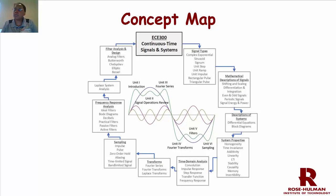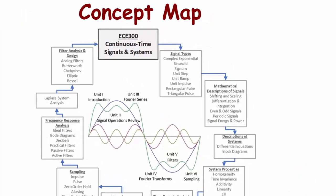This course is all about signals and systems modeling. For signals analysis, we use Fourier series and Fourier transforms for periodic and aperiodic signals. We talk about filter types and designs, and sampling and reconstruction. The following concept map helps you see the global picture of where we're going — we start with the introduction, then signal operations review, Fourier series, Fourier transforms, filters, and sampling.